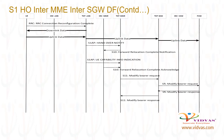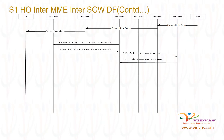Target SGW sends S5 Modify Bearer Request to PGW with target SGW FTEID for downlink path. PGW sends S5 Modify Bearer Response to target SGW. Target SGW sends S11 Modify Bearer Response to target MME. Beyond this point, any downlink data received at target SGW from PGW will be sent to target ENB.